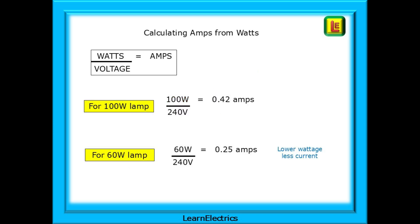Calculating amps from watts is easy. If we have a 100 watt lamp, 100 watts divided by 240 volts is 0.42 amps rounded up. For a 60 watt lamp, this is 60 watts divided by 240 volts for an answer of 0.25 amps, a lower wattage less current. The 3 kilowatt kettle is 3000 watts divided by 240 volts, which means we need a 13 amp fuse in the plug.